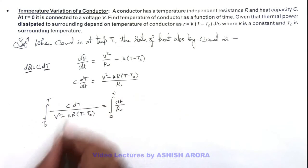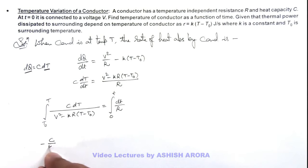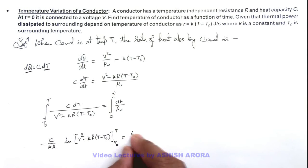So on integrating this will be given as: C times minus 1/(kR) ln(V² - kR(T - T₀)), and we apply its limit from T₀ to T, and this is t/R.